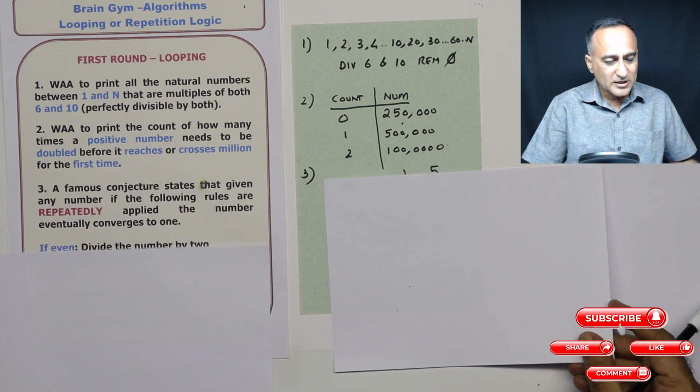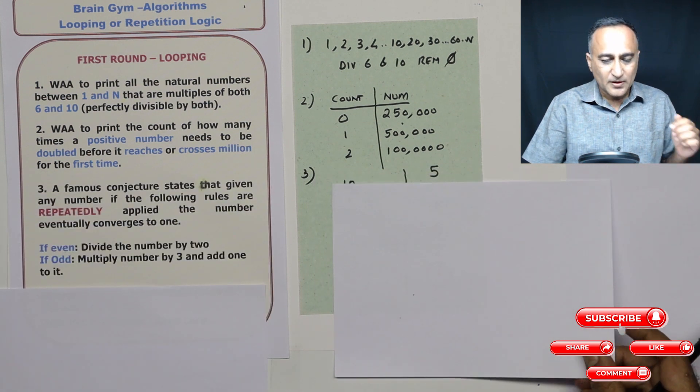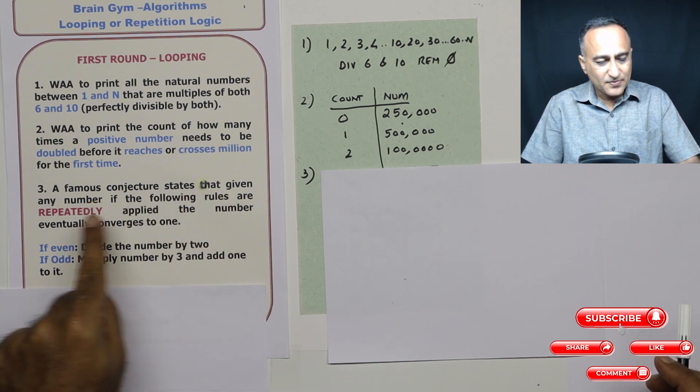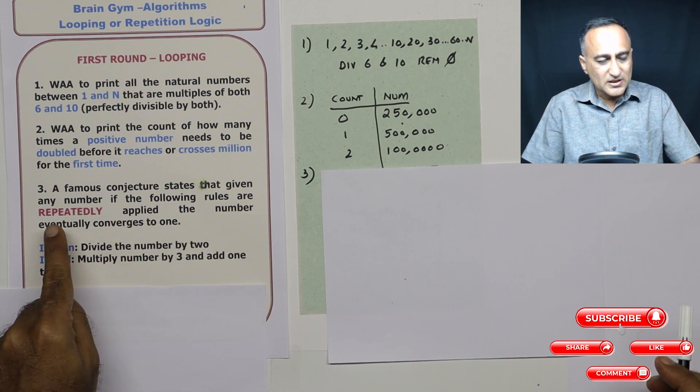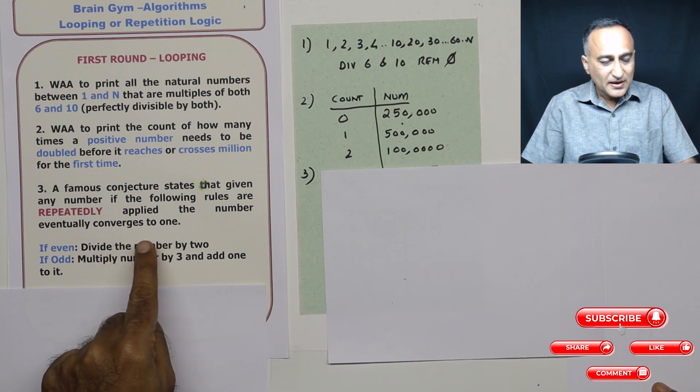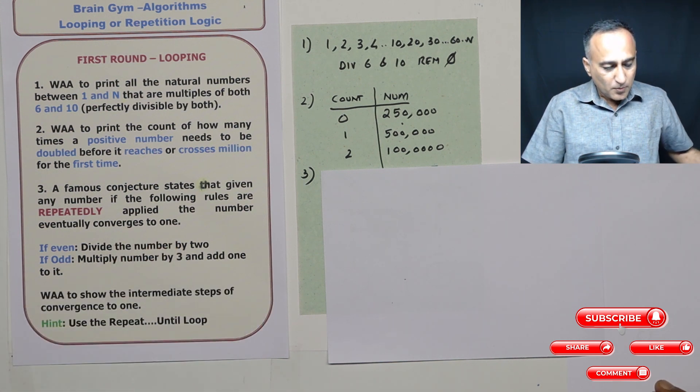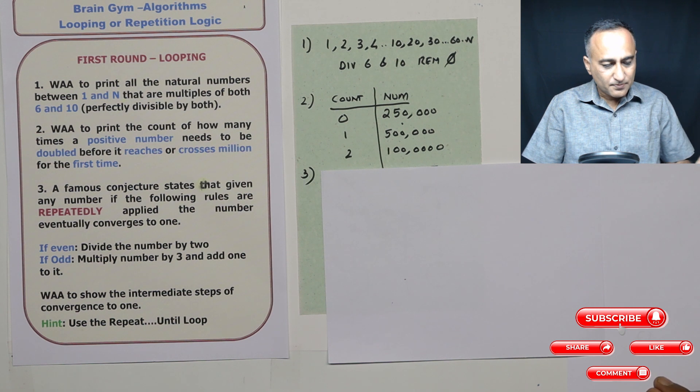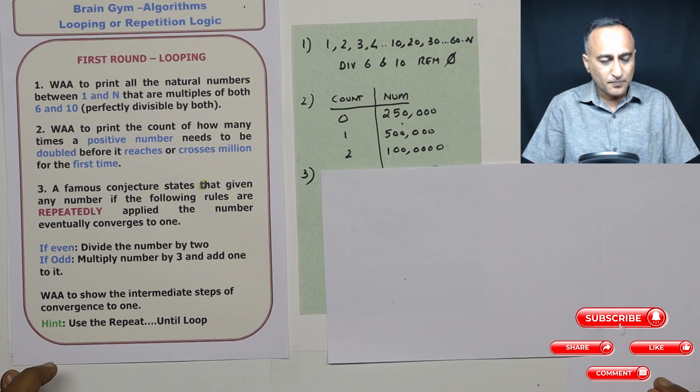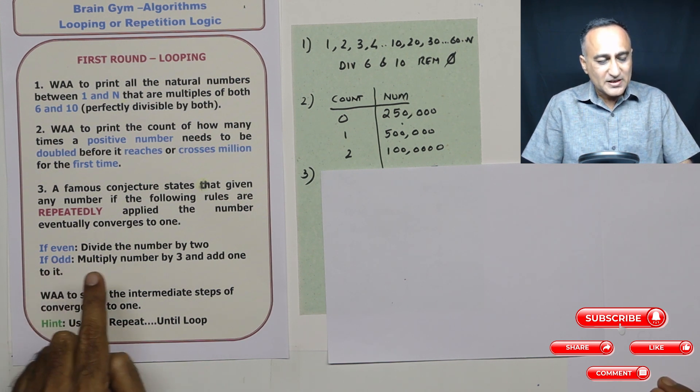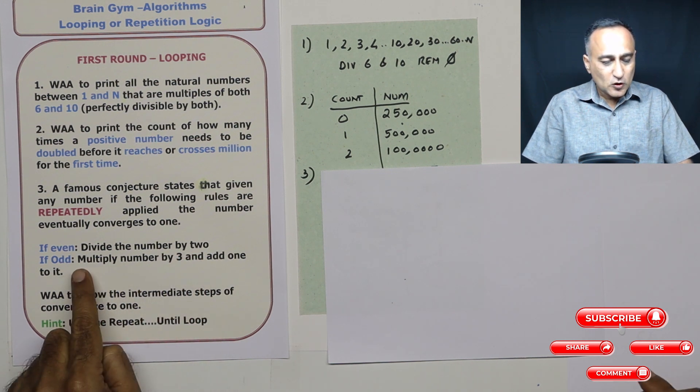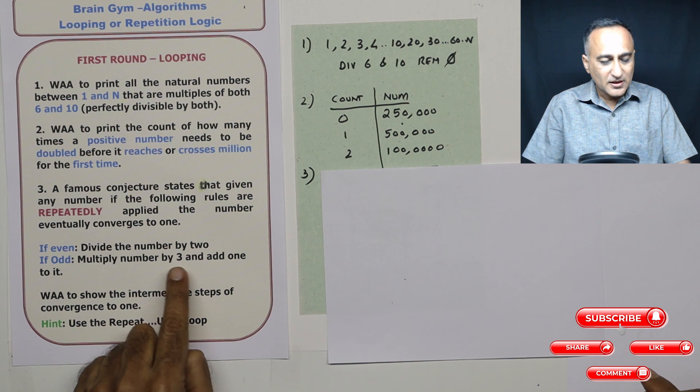What it says is a famous conjecture states that given any number, if the following rules are repeatedly applied, then the number eventually becomes one. Now, I'll just give you a hint. Before even explaining this problem, you can easily solve it using the repeat until loop. If the number input is even, divide the number by two. If the number is odd, multiply by three and add one to it.